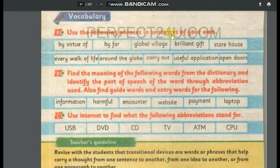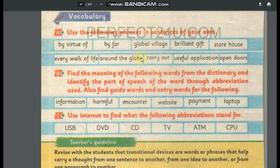The next activity is vocabulary: use the following phrases in sentences of your own. The phrases are: by virtue of, by far, global village, brilliant gift, storehouse, around the globe, useful applications, and open doors. Example: 'By virtue of my love...' — use 'by virtue of' to show the reason or cause for something.